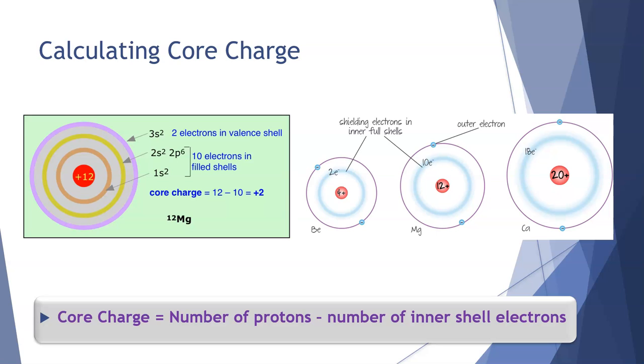When we calculate core charge, we need to be able to determine these shielding electrons. For magnesium, which has an atomic number Z equal to 12, we have 2 in the first shell, 10 in the second shell, and 2 in the third shell. It has a 1s2, 2s2, 2p6, 3s2 arrangement. We can take the electrons in the first and the second shell, add those together, and find that there are 10 shielding electrons between the valence electrons and the outer shell electrons in magnesium.